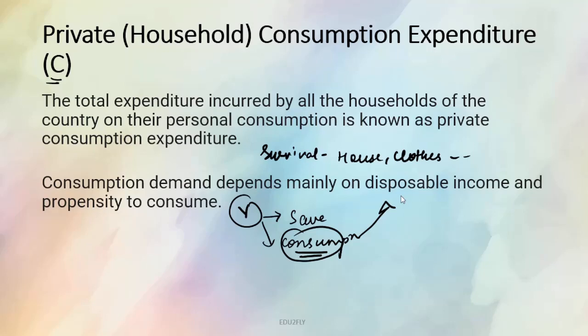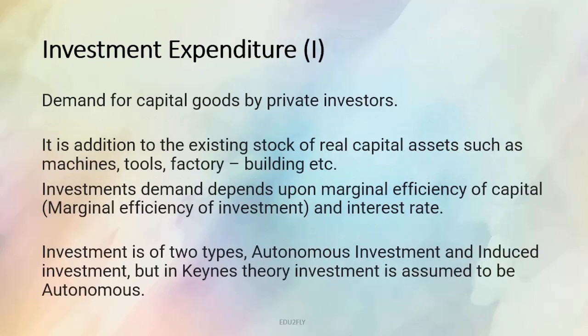So abhi ke liye humne kya dekha — private consumption expenditure ko hum C se denote karte hai, jo bhi household expenditure hai woh isme include hota hai. Next one is the investment expenditure. Investment expenditure basically firm/producing sector ka hota hai — producing sector ka jo expenditure hai capital goods pe, ya phir building pe, machinery pe — yeh sab capital goods hi hai, capital assets hi hai. Toh jitna bhi unka expenditure hai in sab cheezon pe, that will be included in the investment expenditure.